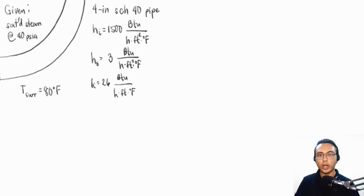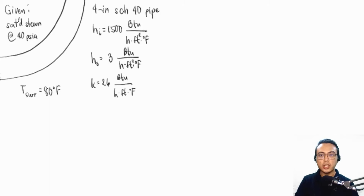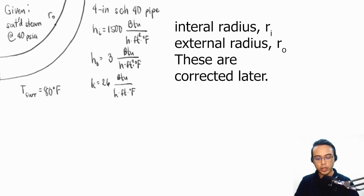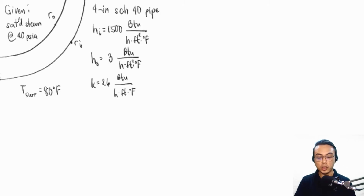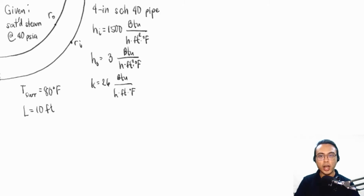Here we have the collection of givens for our problem. We have saturated steam at 40 pounds per square inch absolute flowing inside a pipe. This is the cross-section of the pipe, represented with internal radius R sub I and external radius R sub O. We want to determine the heat loss through 10 feet of this pipe, so our length is equal to 10 feet.